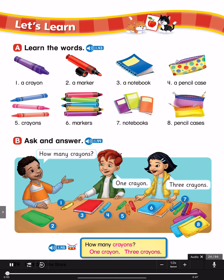Page 24, Let's Learn A. Learn the words. Number 1: a crayon. Number 2: a marker. Number 3: a notebook. Number 4: a pencil case. Number 5: crayons. Number 6: markers.